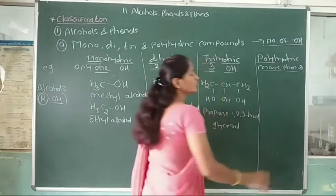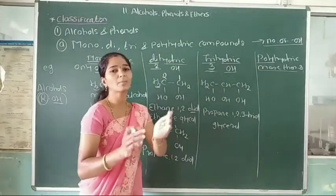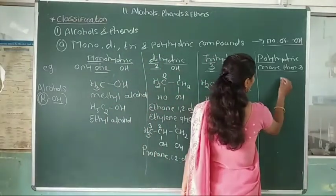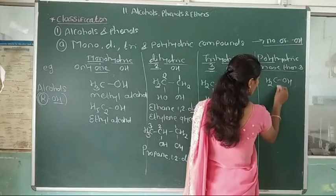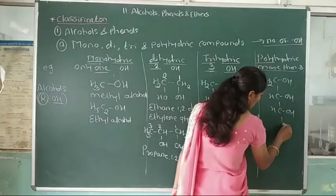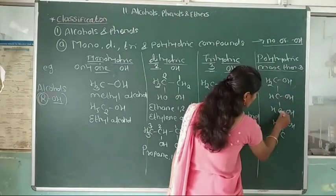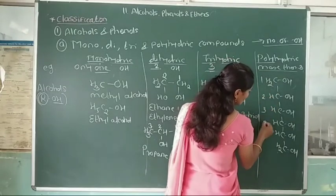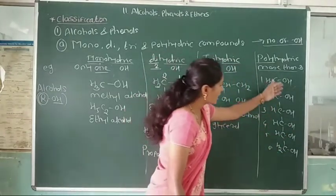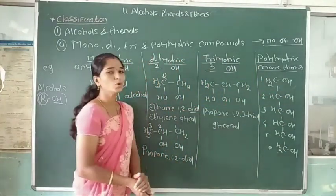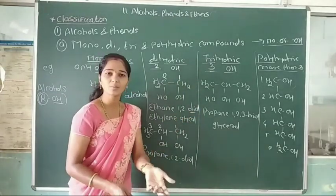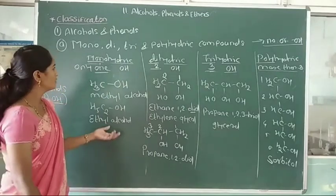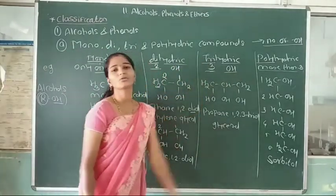Last, polyhydric compounds — more than three hydroxy groups attached to different carbon atoms. For example, a compound with 6 carbon atoms and 6 hydroxyl groups each attached to different carbon atoms. This is an example of a hexahydric compound, called sorbitol.